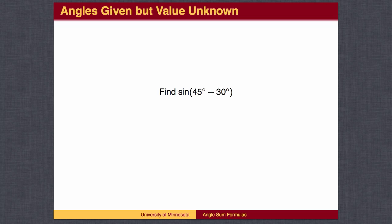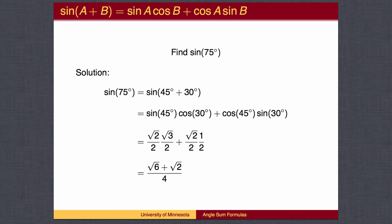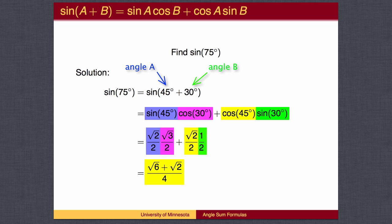Even if you know the two angles and can add them, you may not know the value of the sine unless the angle is one of the special angles on the unit circle. In this case, we'll have to rely on the angle sum formula. We find the sine of 75 degrees by using the angle sum formula, where angle A is 45 degrees and angle B is 30 degrees. We look up the values from the unit circle and simplify.